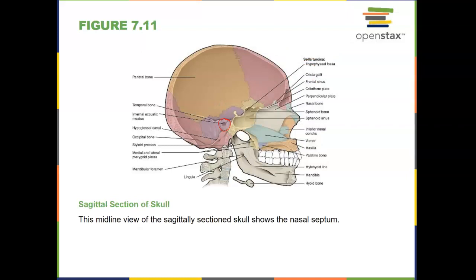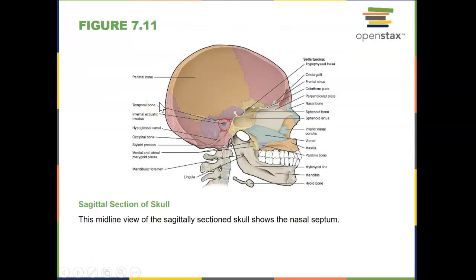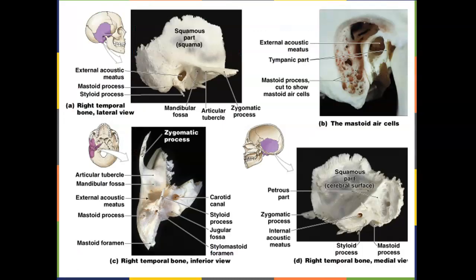On the exterior of the skull you'll find the external acoustic meatus — basically the auditory canal, the hole that lets sound in and out. The temporal bones: the entire purple region on this slide is the temporal bone, of which you have two. External features include the zygomatic process, mastoid process, and external auditory/acoustic meatus. Internal features include the internal auditory/acoustic meatus. We also have the styloid process, stylomastoid foramen, mandibular fossa, carotid canal, and petrous portion. The squamous region is the smooth surface.